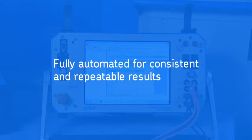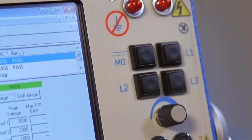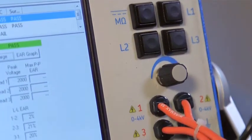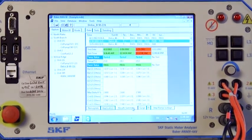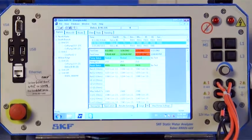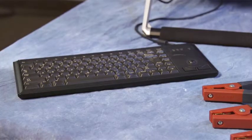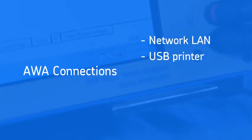The AWA has three switched test leads so all three phases of the motor can be tested without reconnecting the leads. A color touchscreen interface and familiar Windows operating system make this tester easy to use. A keyboard is available as well. The AWA can also connect to a network LAN, USB printer, SKF power pack, foot switch, and safety lights.